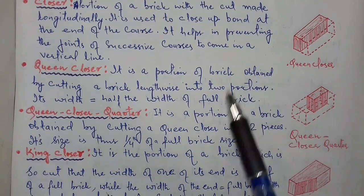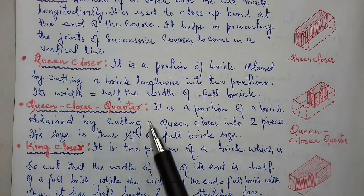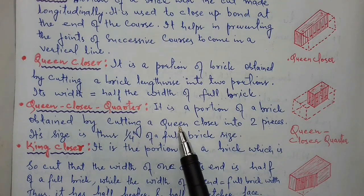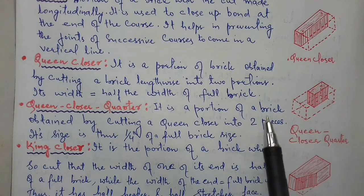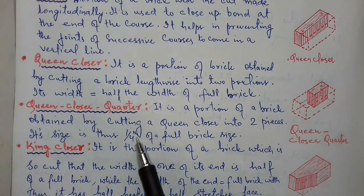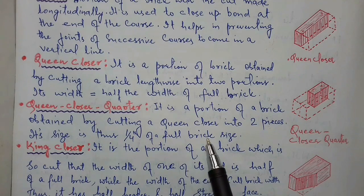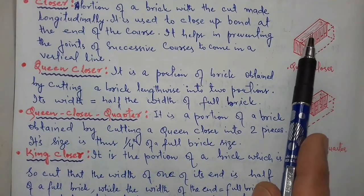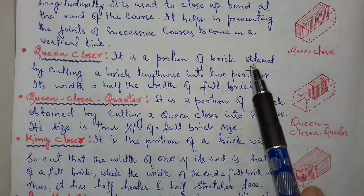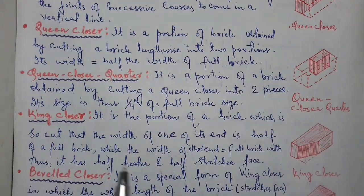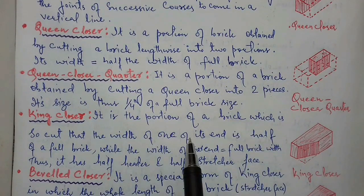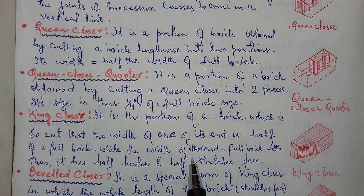Queen closer quarter: it is a portion of a brick obtained by cutting a queen closer into two pieces. Its size is thus one-fourth of a full brick. Obviously, if you cut this queen closer into two parts it forms a queen closer quarter.